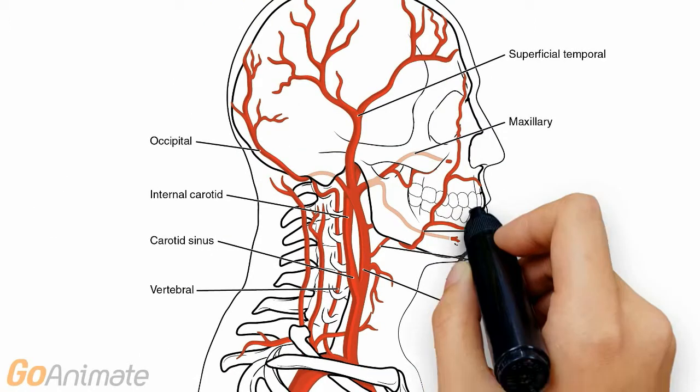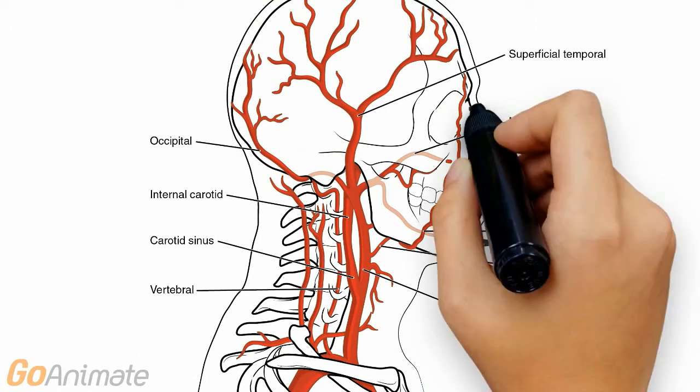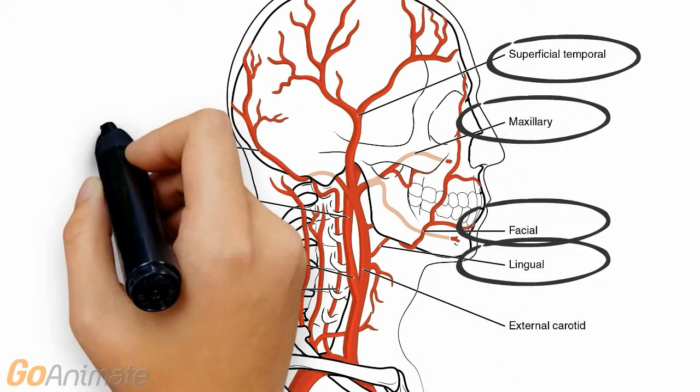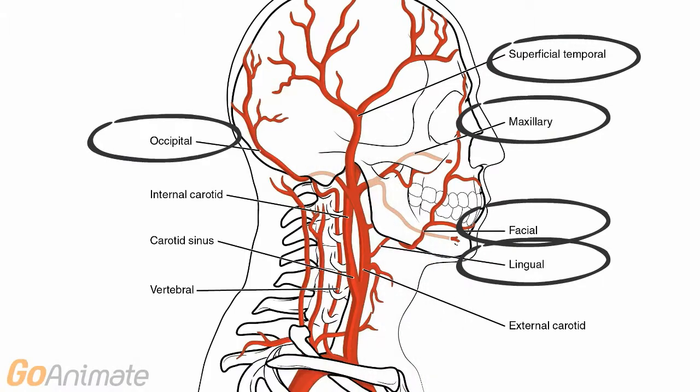The internal carotid enters the skull to supply the brain. The external carotid remains outside of the skull. Its branches include the lingual, facial, maxillary, superficial temporal, and occipital.